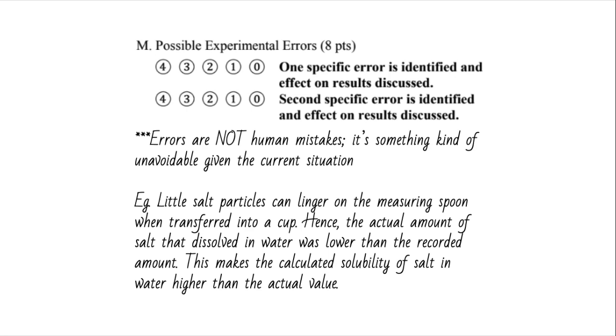It needs to be something unavoidable given the situation that you were in. For example, say little salt particles, if you're testing solubility of salt in water, little salt particles can linger on the measuring spoon when they're transferred into the cup with the water. So the actual amount of salt that is dissolved in water is a little lower because not all that you measured out is going to be in the cup, which means that this will make the calculated solubility of salts higher than the actual value because not all the salt went into dissolving in water. You need to do two of those. Explain yourself, think through it logically, and come up with your estimate. Is this going to be an overestimate or underestimate, or maybe the calculations are going to be whack?